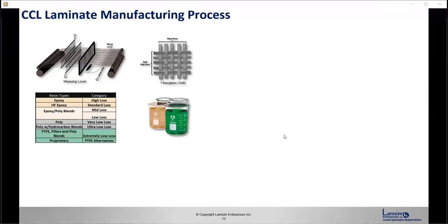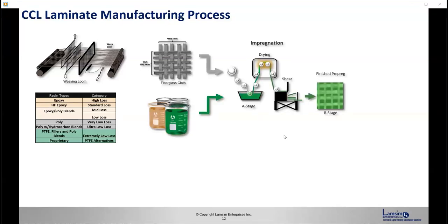Then there's the resin that is used with it. And there's many different kinds of resin used today, from epoxy to proprietary blends. The glass fiber cloth deck then gets impregnated with the resin called the A-stage. And it goes through a drying process, and the sheets are sheared off in sizable sheets, and you end up with a finished prepreg called the B-stage. And that's semi-cured prepreg.